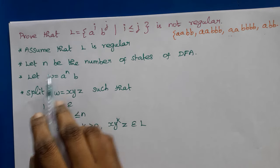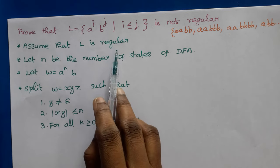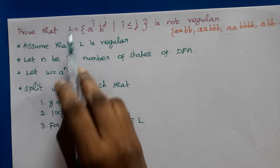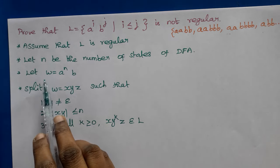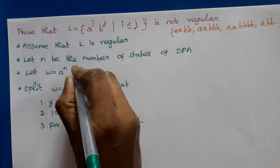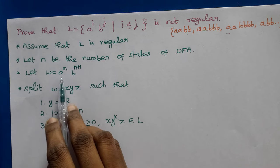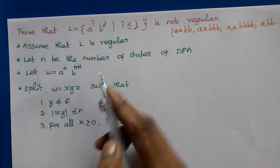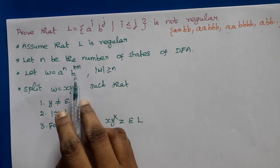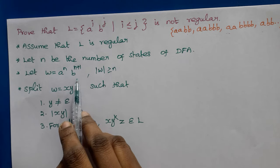To prove a language is not regular, first we assume the language is regular. This is the proof by contradiction method. We assume L is a regular language, and let N be the number of states of the DFA. We choose a string W from L where the length of W is greater than or equal to N. If we have N number of A's, it should be followed by at least N+1 number of B's.